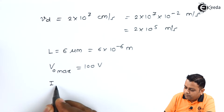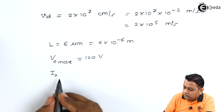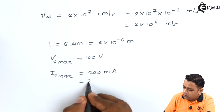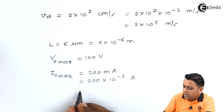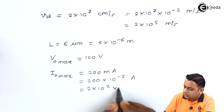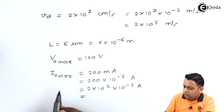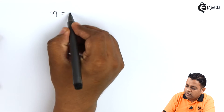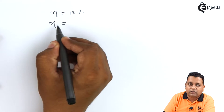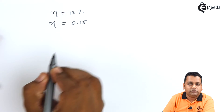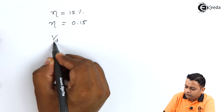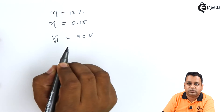Maximum operating current I0_max = 200 milliamperes = 2 × 10^−1 amperes. Efficiency η = 15% = 0.15. Finally, breakdown voltage V_bd = 90 volts.